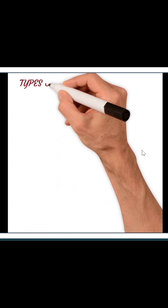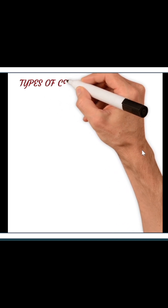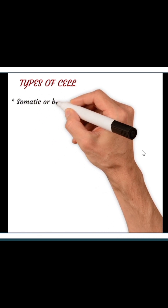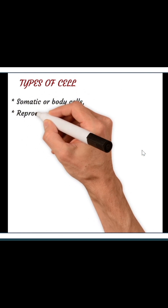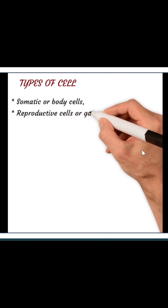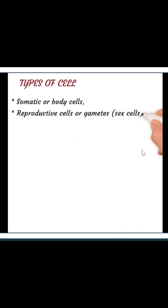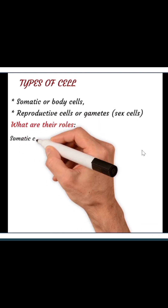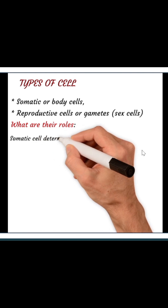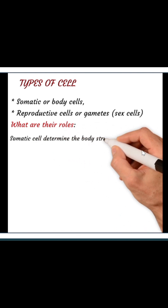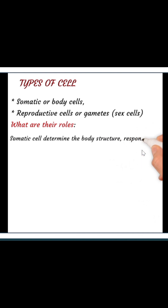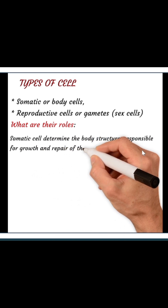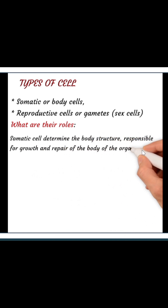Let's look at the types of cells. We have two types of cells: somatic cells or body cells, and reproductive cells or gametes or sex cells. Somatic cells determine the body structure and are also responsible for growth and the repair of the body of the organism.